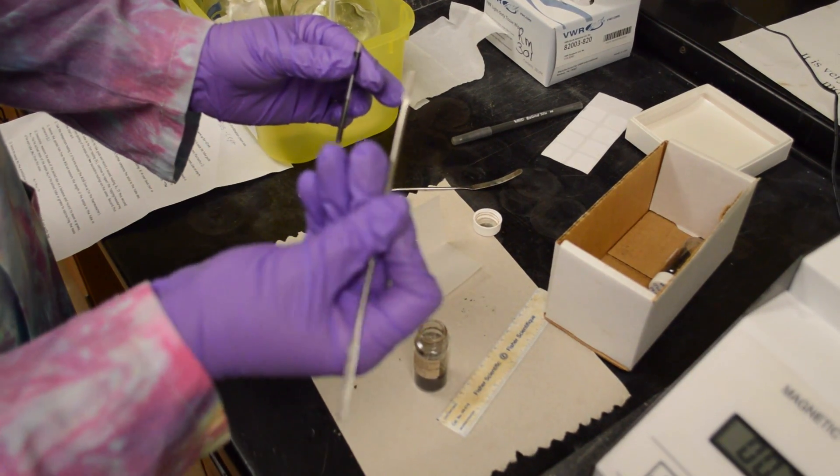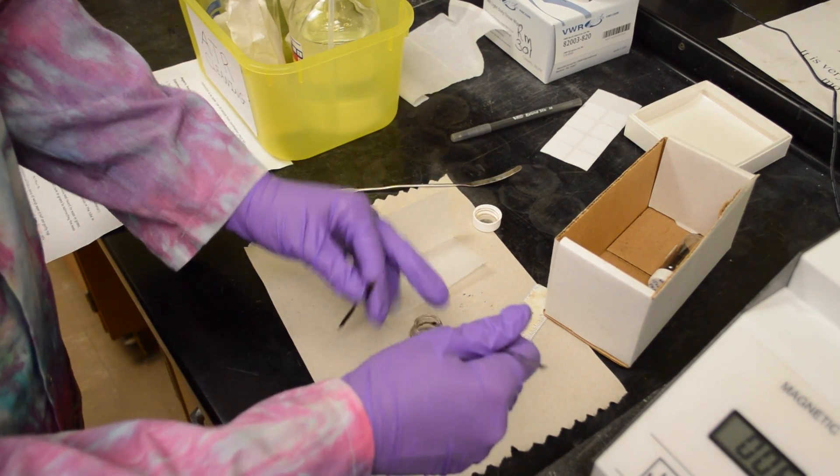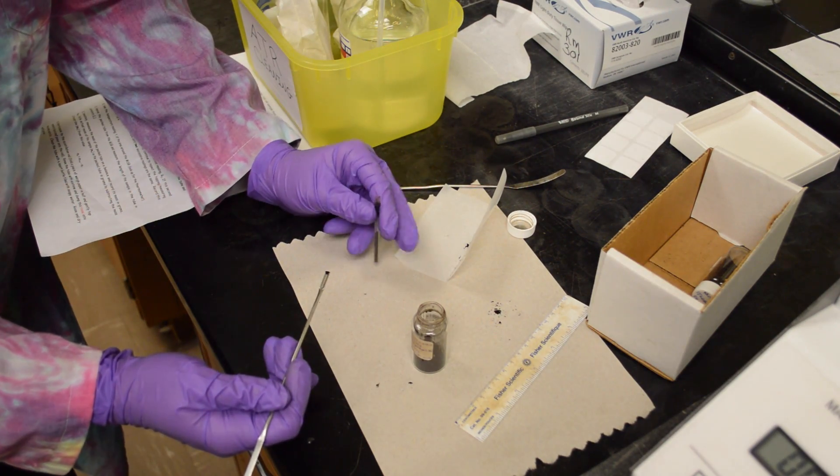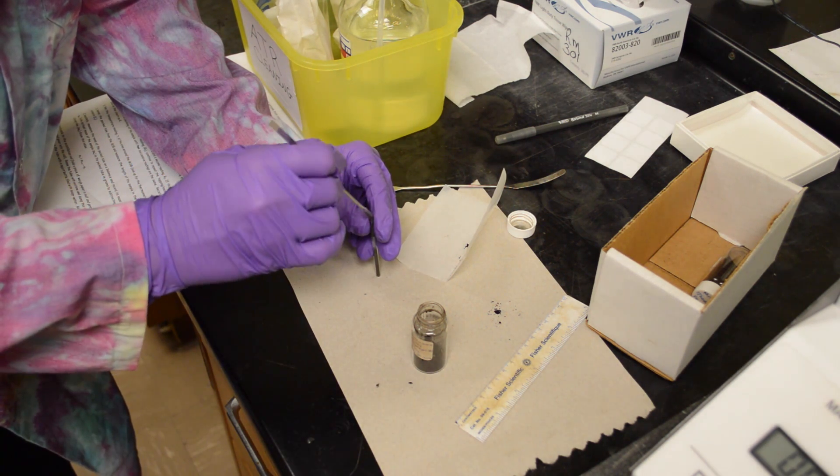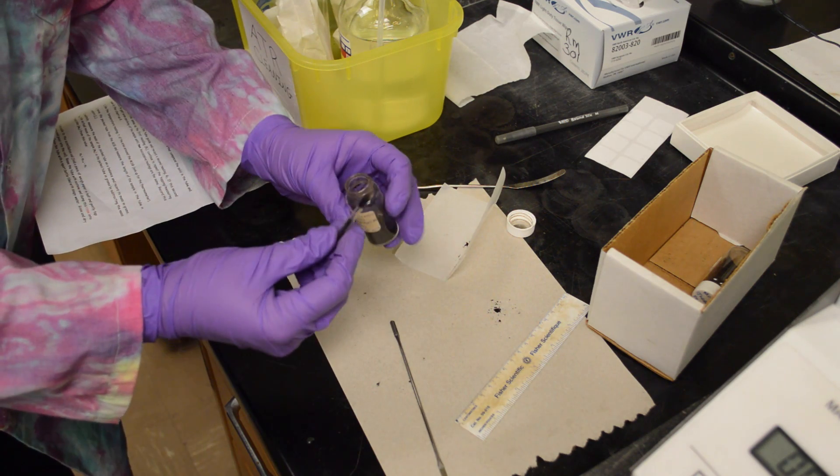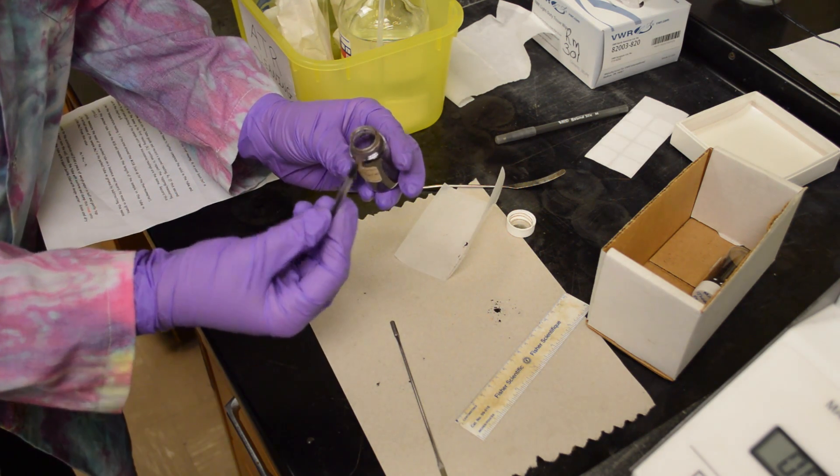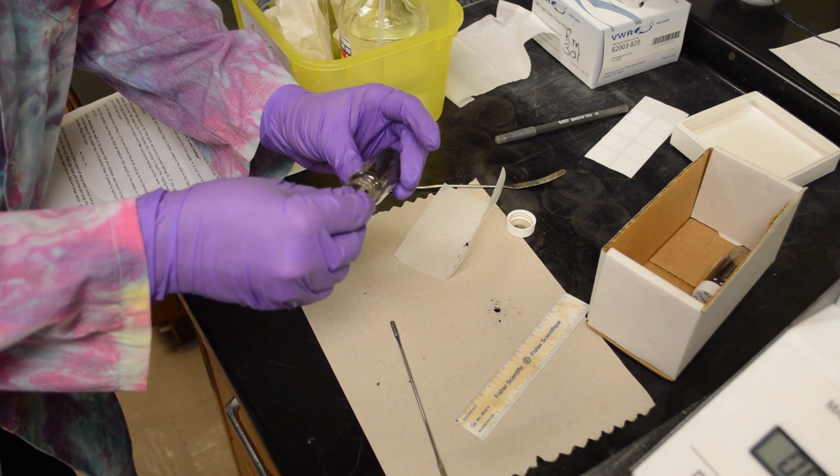We can use the scoopable end of the spatula here. Gather some of the sample and scoop it up on this little spatula and pour it in this way. Or you can use it like you would a capillary tube for meltemp and put the end into the sample vial and collect the sample that way.